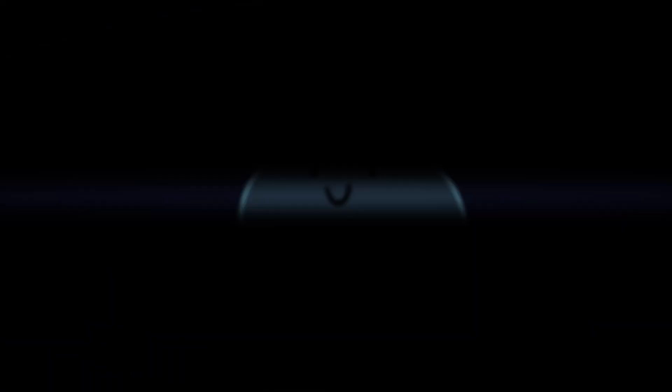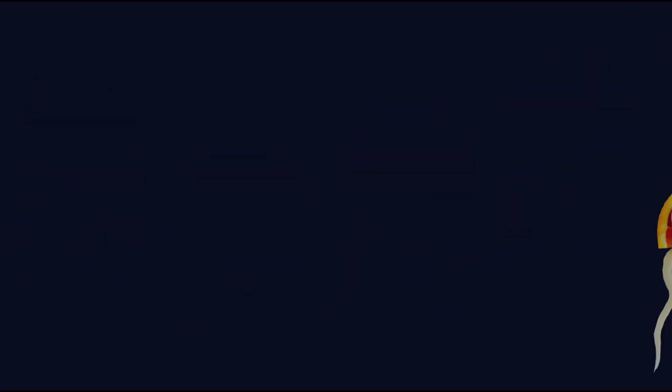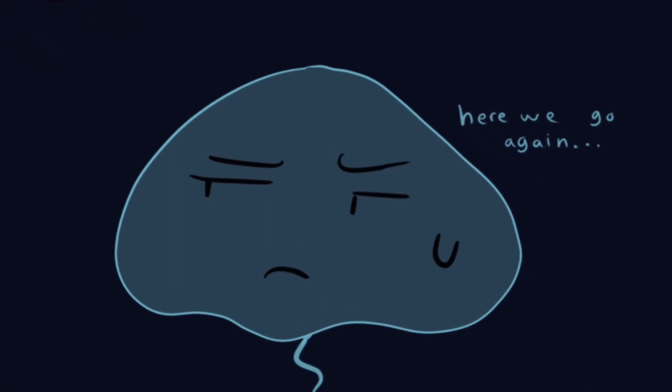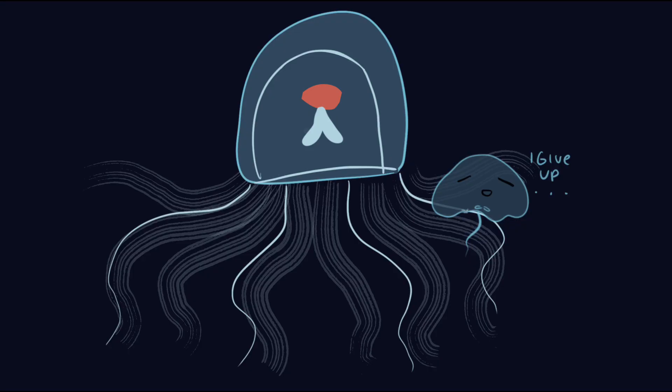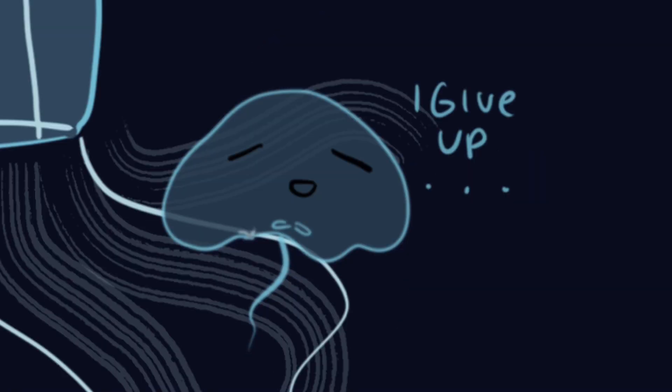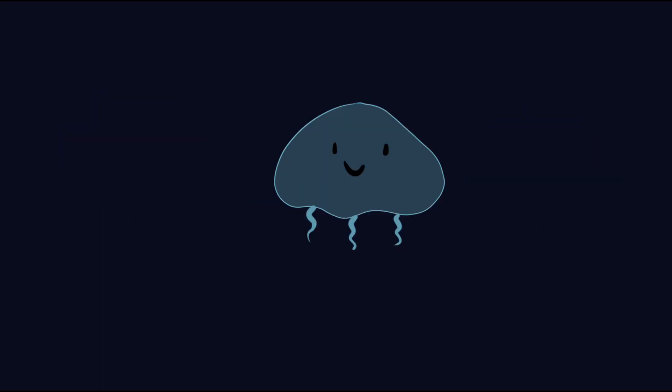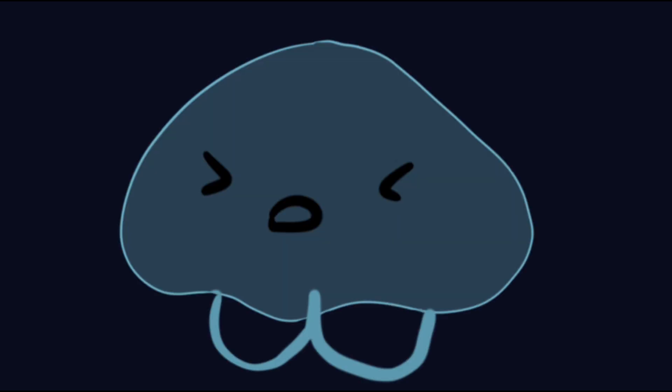As a larva, you are plankton, which is just a polite way of saying free-floating ocean snack. Everything in the ocean wants to eat you. Tiny fish, shrimp, other jellyfish. Heck, even your own species might give it a go if they're hungry enough. So you drift, you wiggle, you pray, if jellyfish could pray, that you won't get slurped up by something with teeth.